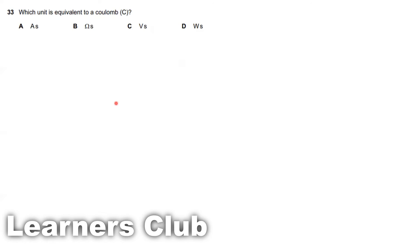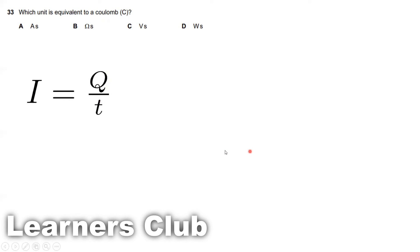Question 33. Which unit is equivalent to a coulomb? Coulomb is charge. We know that current equals rate of flow of charge, so Q equals I times T. Charge equals current multiplied by time. Current is in amps and time is in seconds, so the answer is ampere-seconds, which is option A.